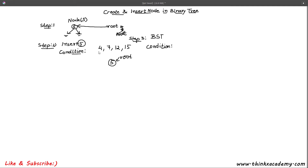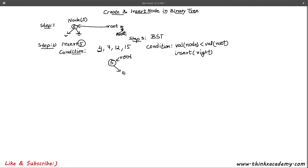The first condition says that if the value of the node you wish to insert has a value less than the value of the root node, we compare it with the root node. Since 4 is lesser than 5, we are going to insert it at the left part of the tree. So 4 will get inserted in the left part of the tree.